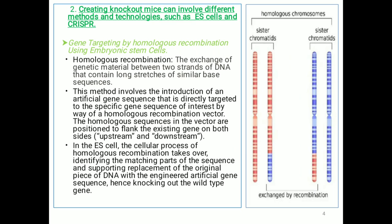Next, how we can create knockout mice? Creating a knockout mouse can involve different methods and technologies, such as by using embryonic stem cells and utilizing CRISPR. First, how we can create it by using embryonic stem cells — that is, gene targeting by homologous recombination using embryonic stem cells.